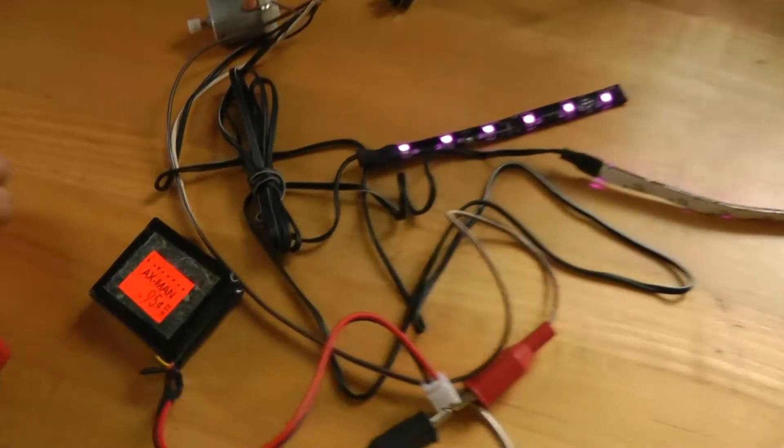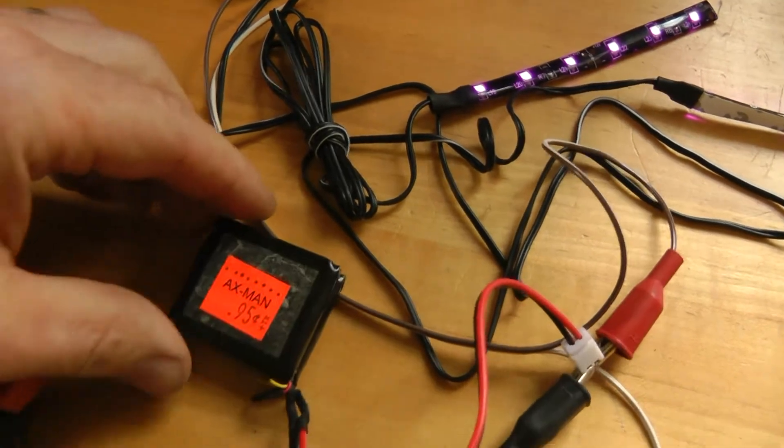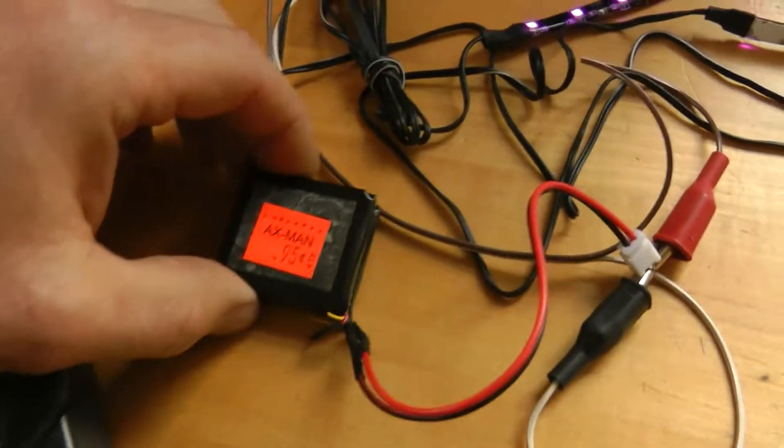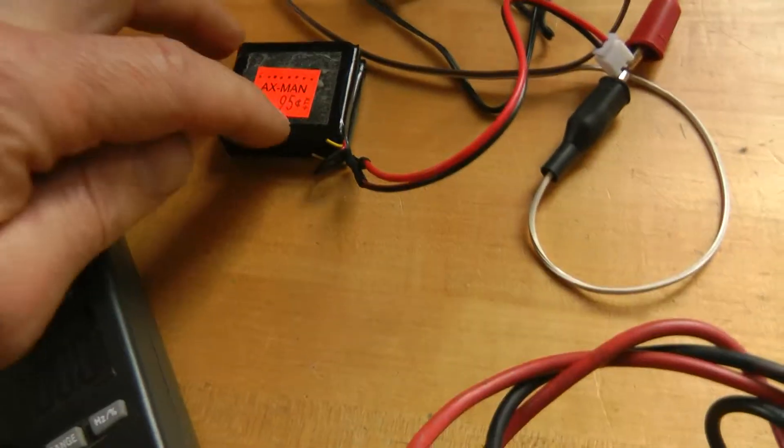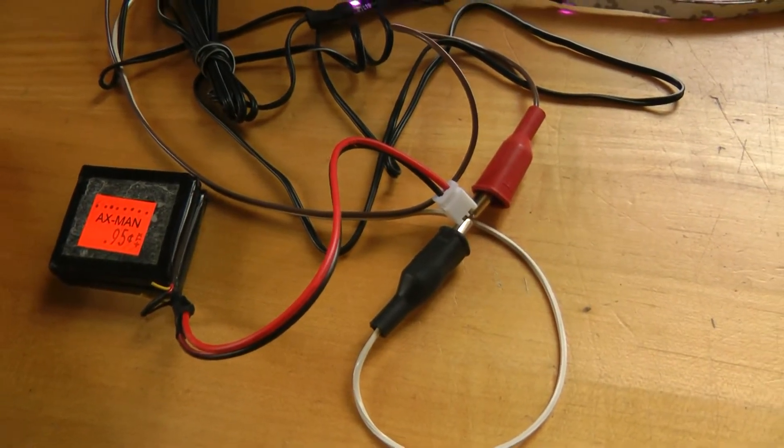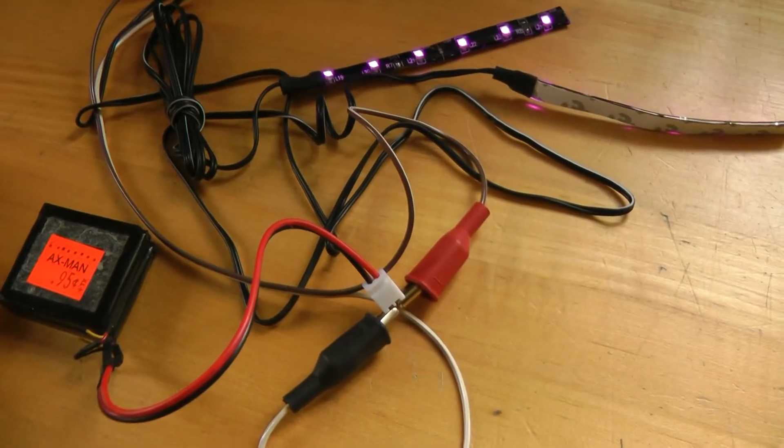New plan. My local surplus store, I was able to pick up these old cell phone lithium-ion batteries. They're 3.7 volts apiece. I tied them together to make about 7.5 volts, which is plenty to drive my solenoid.